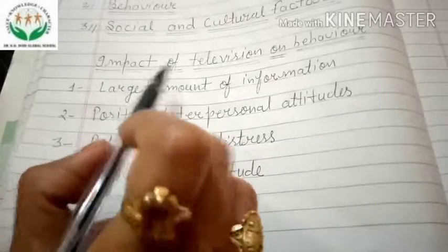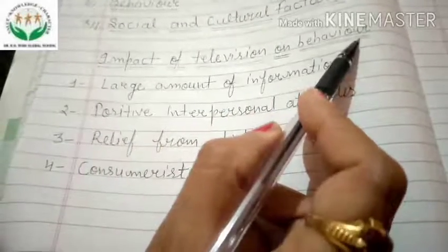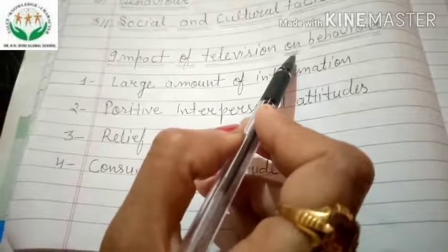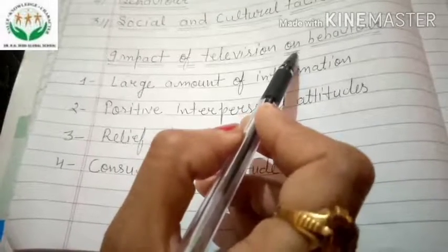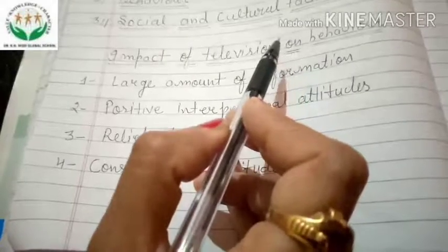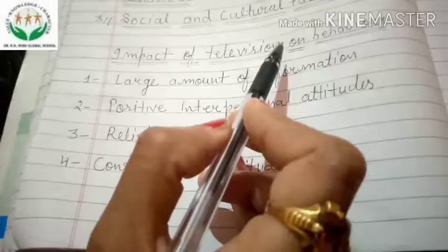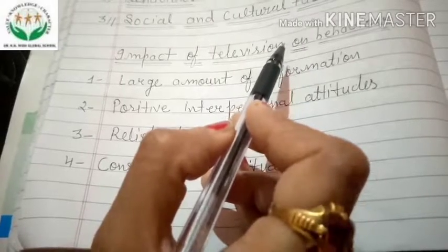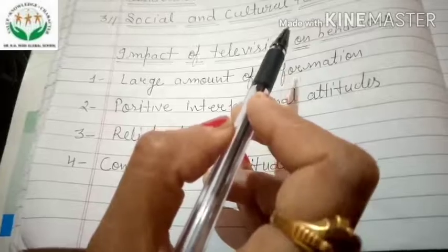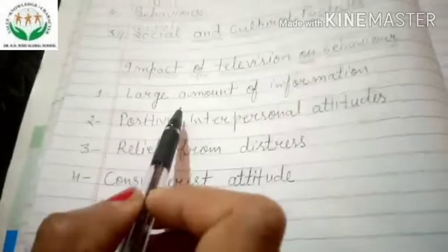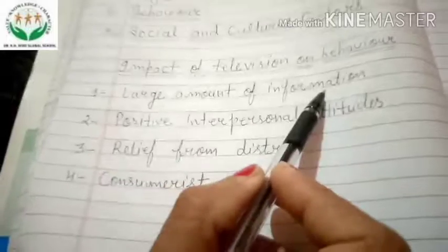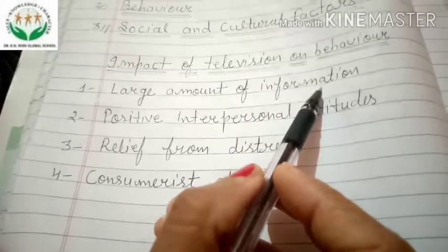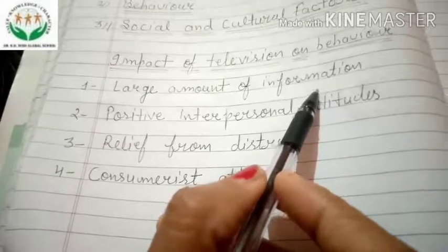The last topic is the impact of television on behavior. There is no doubt that television has been a useful product of technological progress; however, from the point of view of its psychological impact on human beings, both positive and negative effects have been observed. Many research studies have inquired into the effects of television viewing on cognitive processes and social behavior, especially in western cultures, and their findings show a mixed impact. First, television provides a large amount of information in an attractive visual form, which makes it a powerful medium of instruction.